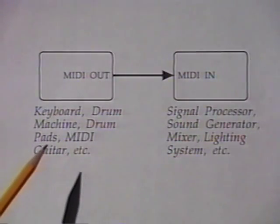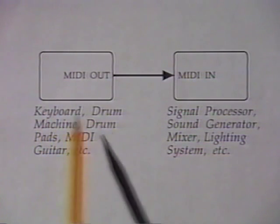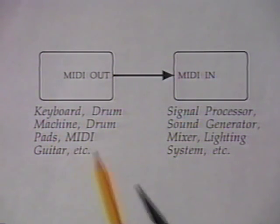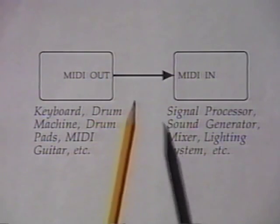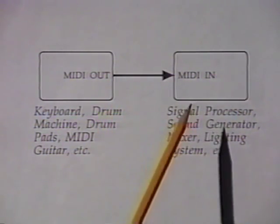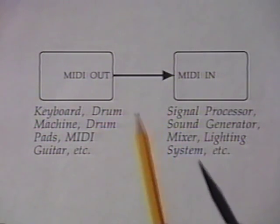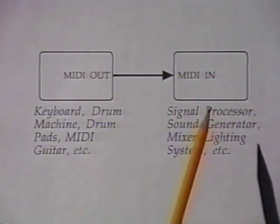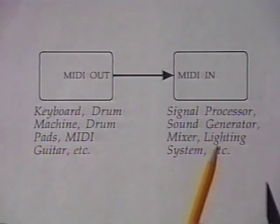Let's look at the first diagram here. This shows a real simple basic MIDI setup. The left block here is a keyboard, or a MIDI guitar, or MIDI drum pads — some kind of MIDI controller. It sends its data out the MIDI out. The second unit is a signal processor, sound module, mixer, lighting controller — anything that can be controlled by MIDI. We just route the MIDI out into the MIDI in. Simple transmitter-receiver type relationship. That's the simplest setup you can do.